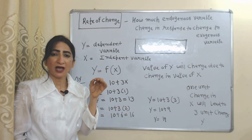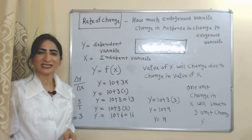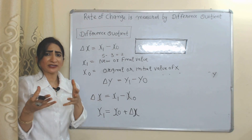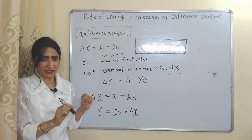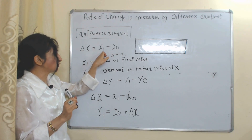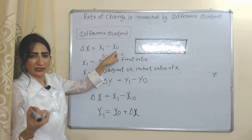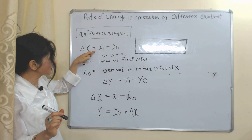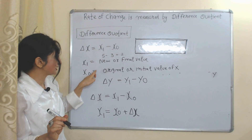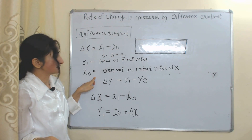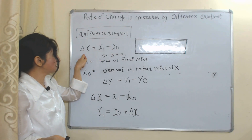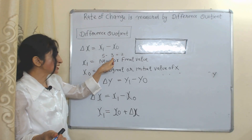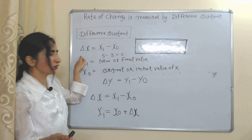Rate of change is measured by the difference quotient. Change in x equals x1 minus x-naught, meaning we calculate change in x by subtracting the original value from the new value. Here delta x is change in x, x1 is the new value, and x-naught is the initial value. For example, if the new value is 5 and the original is 3, the change in x equals 2.